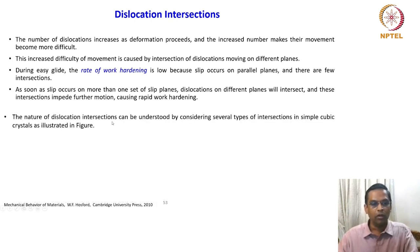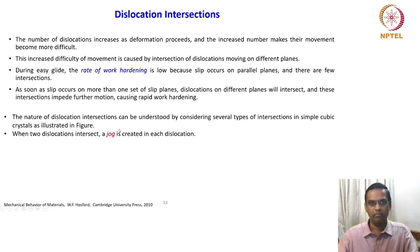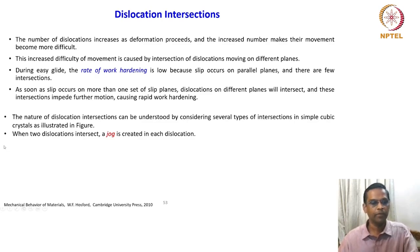The nature of dislocation intersections can be understood by considering several types of intersection in simple cubic crystals as illustrated here. This is one set of schematics we are going to look at — a very simple case — to understand what kind of impact intersection will create. When two dislocations intersect, a jog is created in each dislocation.